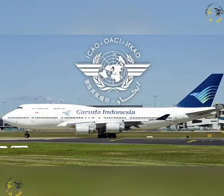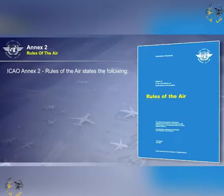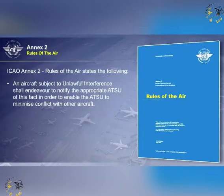The content of other ICAO Annexes and documents relate directly to security, and you should be familiar with them. The first is ICAO Annex 2, Rules of the Air, which states that an aircraft subject to unlawful interference shall endeavour to notify the appropriate air traffic service unit of this fact, in order to enable the air traffic service unit to minimise conflict with other aircraft.